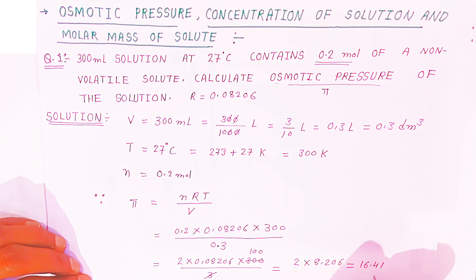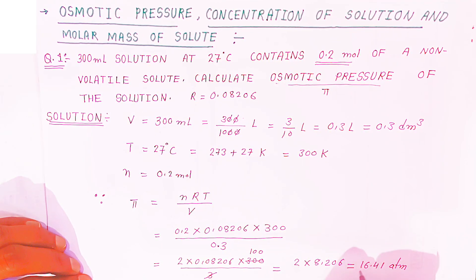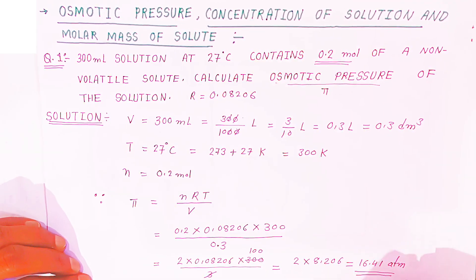16.41. So this is the answer because it is pressure, we have to write in atmospheres. So this is the osmotic pressure. We have got the answer: 16.41 atm.